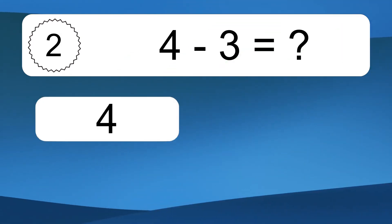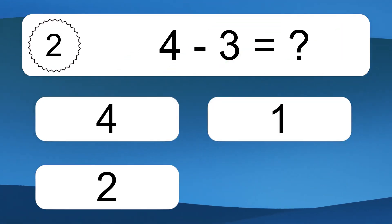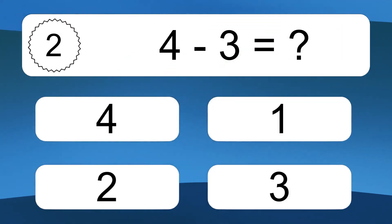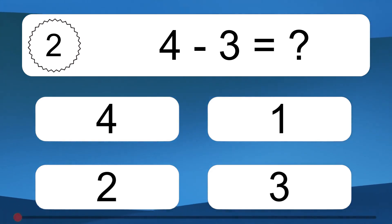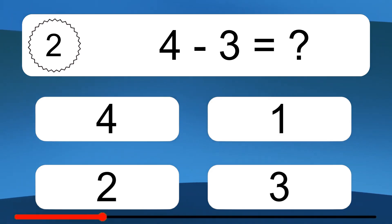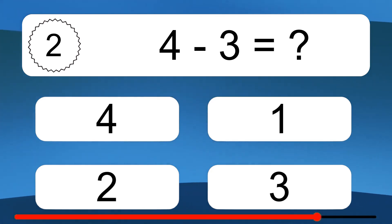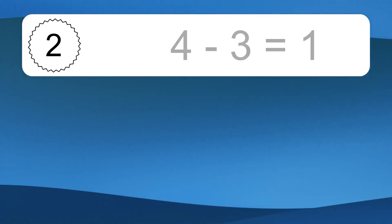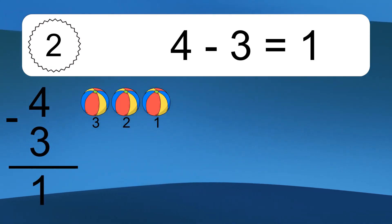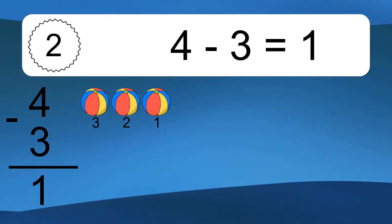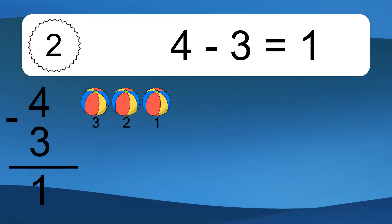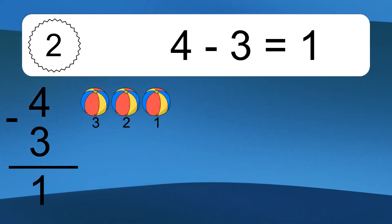4 minus 3 equals what? 4 minus 3 equals 1. Let's count it: 3, 2, 1.